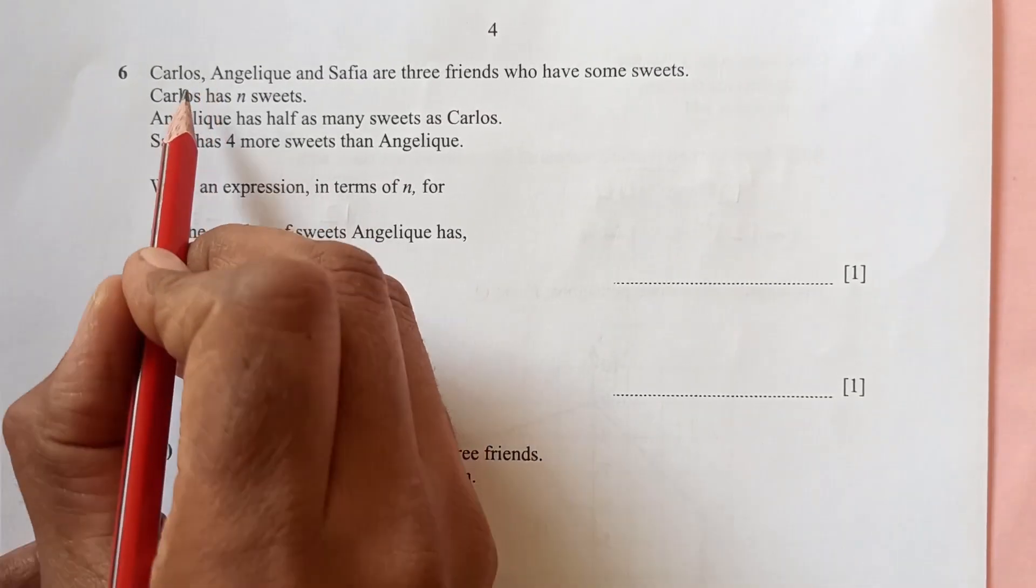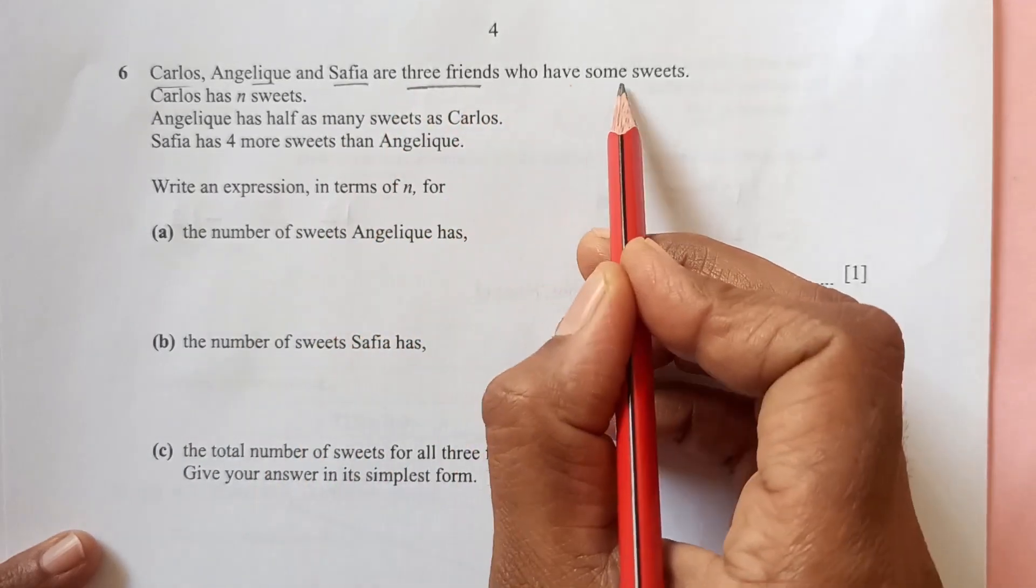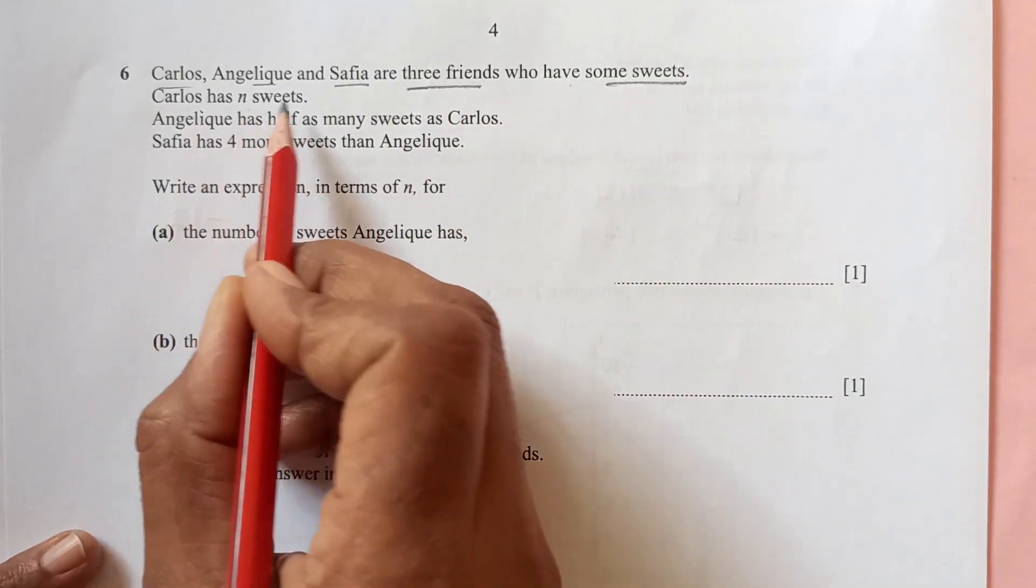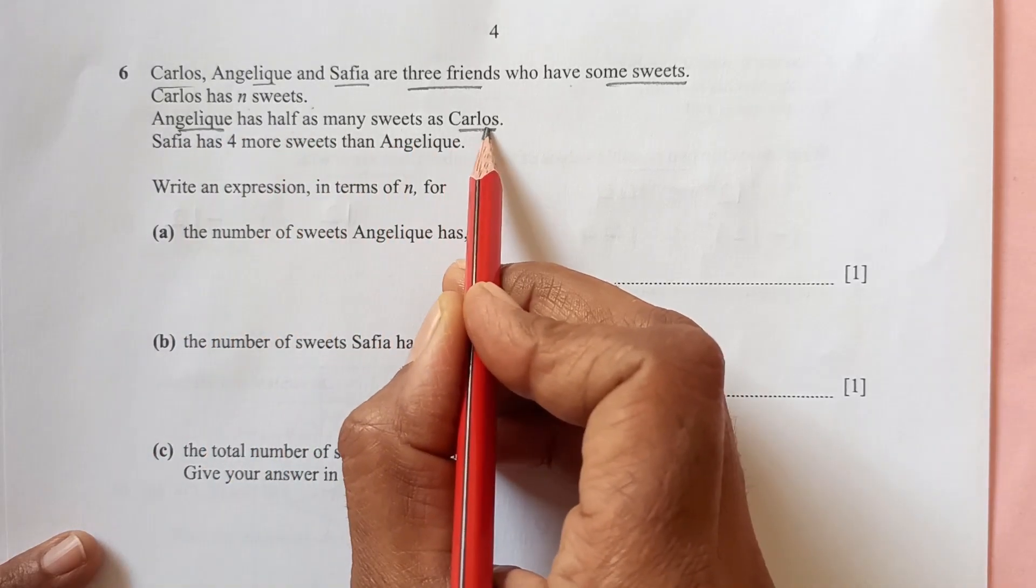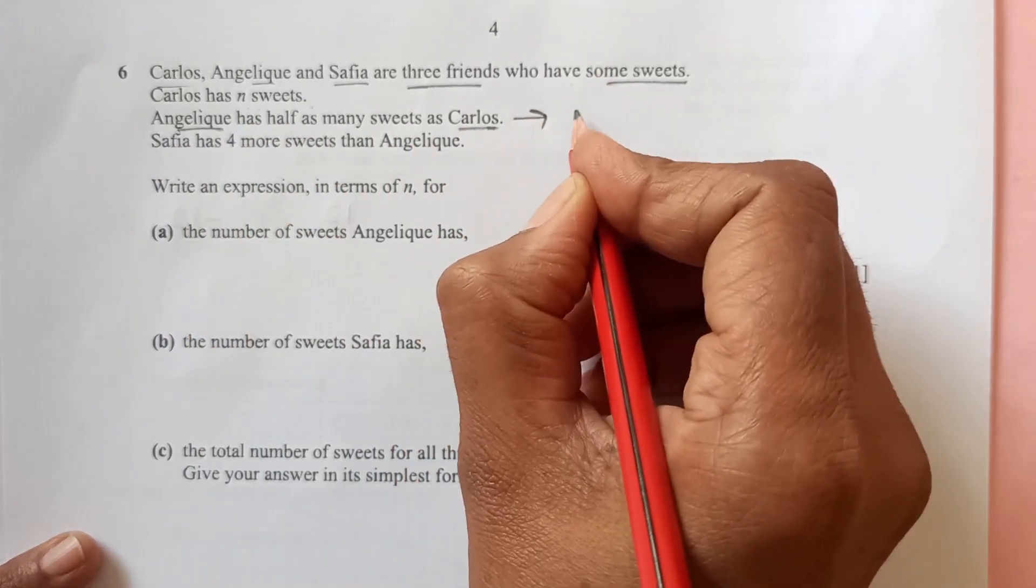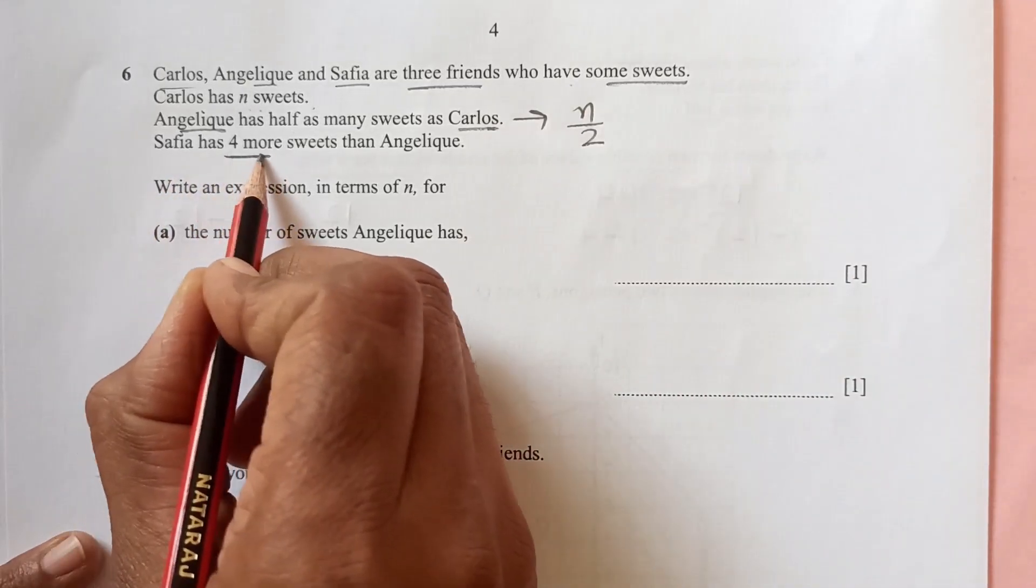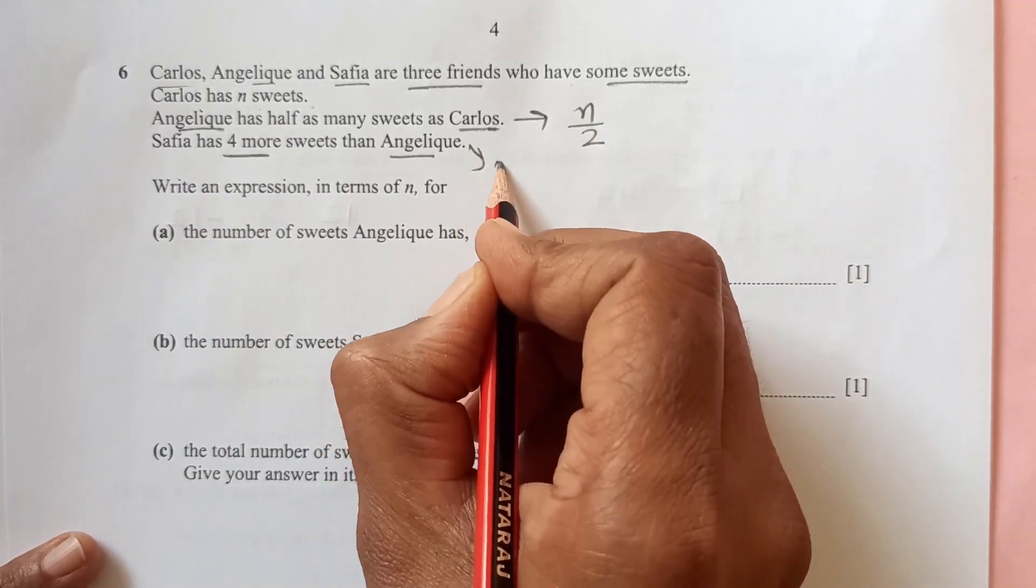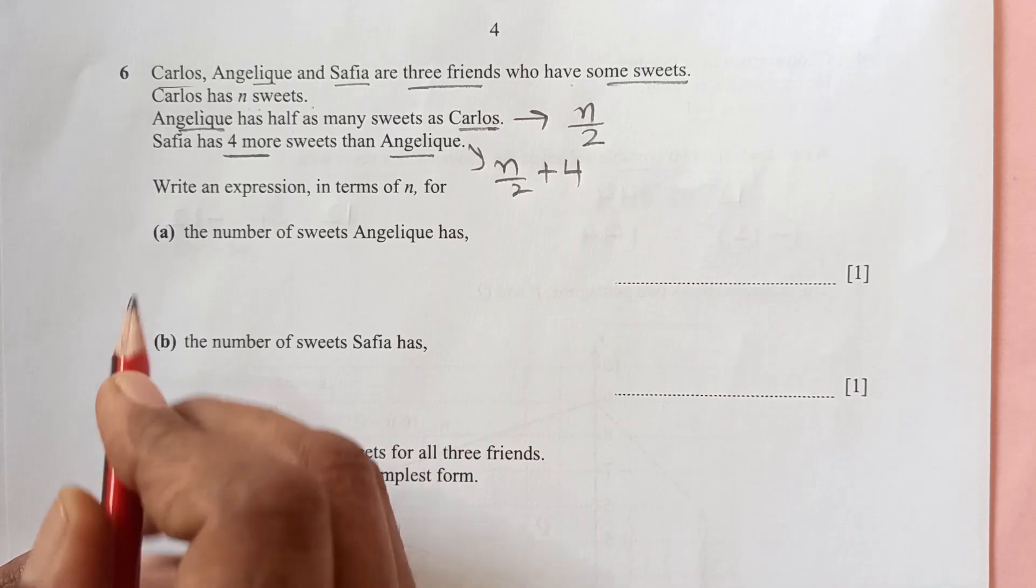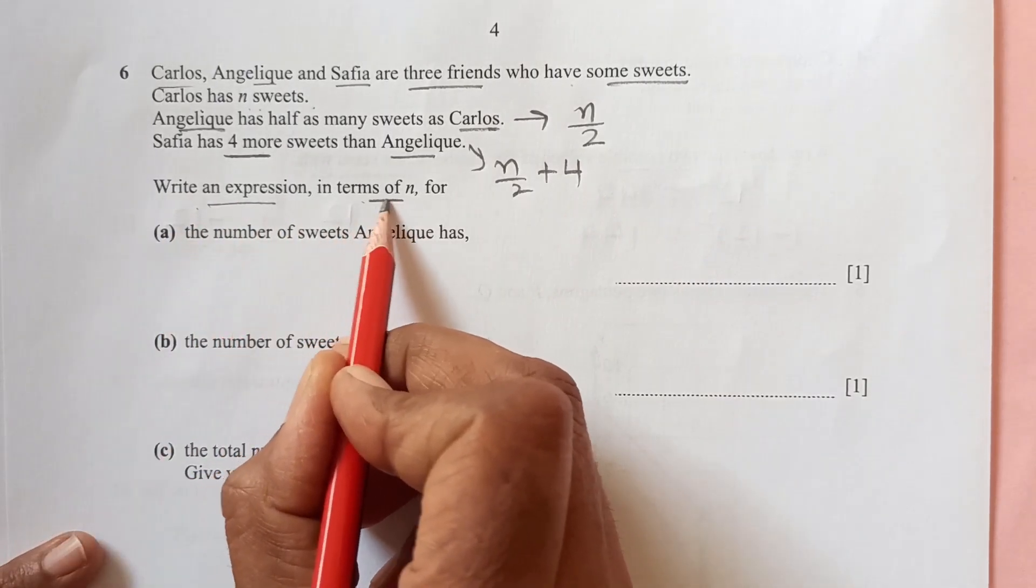Question number six: Carlos, Angelic, and Sophia are three friends who have some sweets. Carlos has n sweets. Angelic has half as many sweets as Carlos, so that is n over 2. Safia has four more sweets than Angelic, so that means this will be n over 2 plus 4.